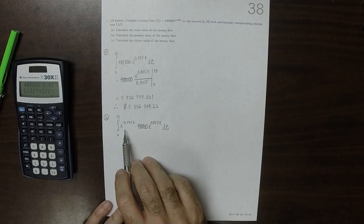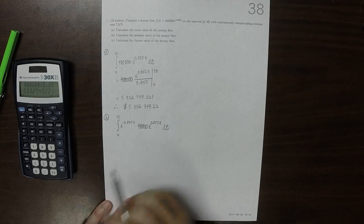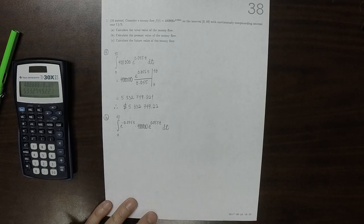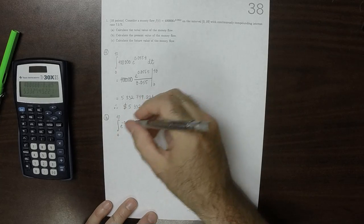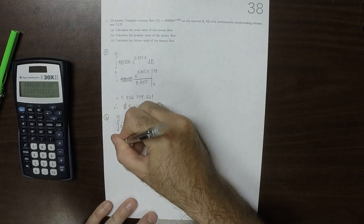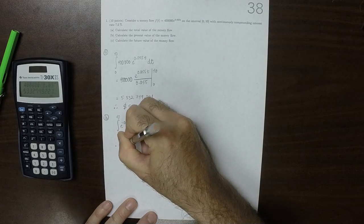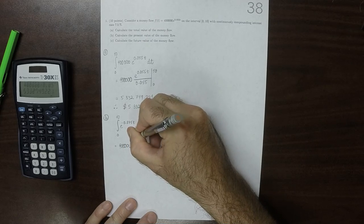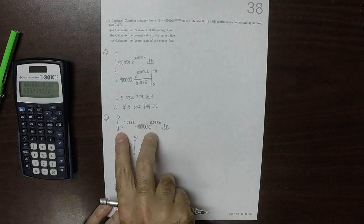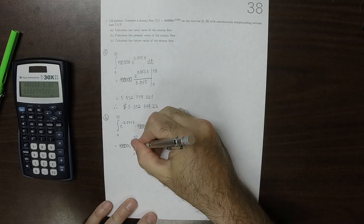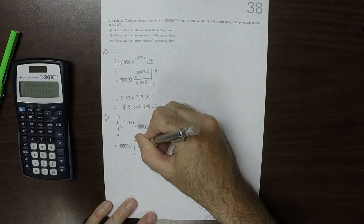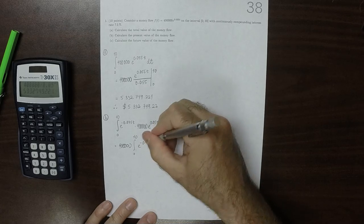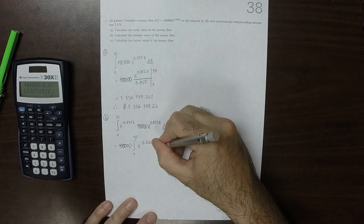So this factor right here is what transports the money as it's obtained back to the present. This expression can actually be simplified a little bit. So we could factor out the 400,000, and then integral 0 to 10, and then we can combine these two by adding exponents. So that would be exponential of negative 0.020t.